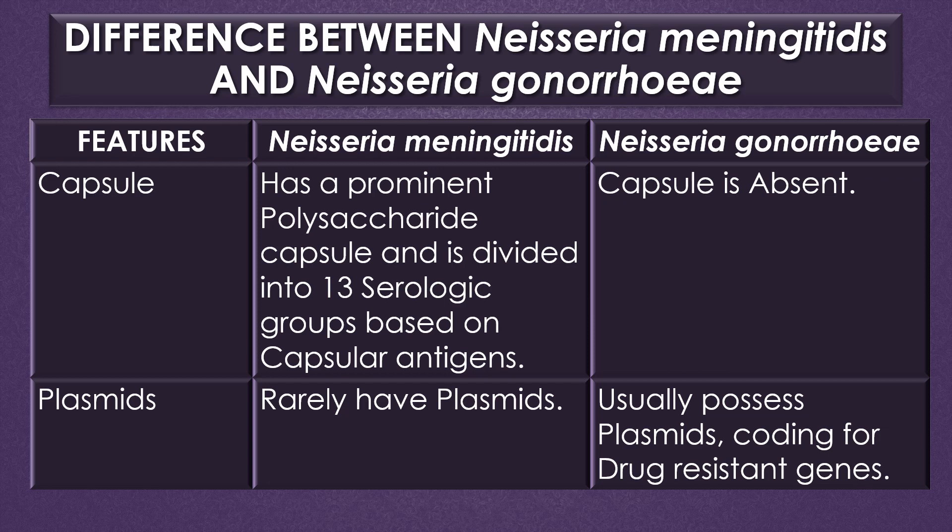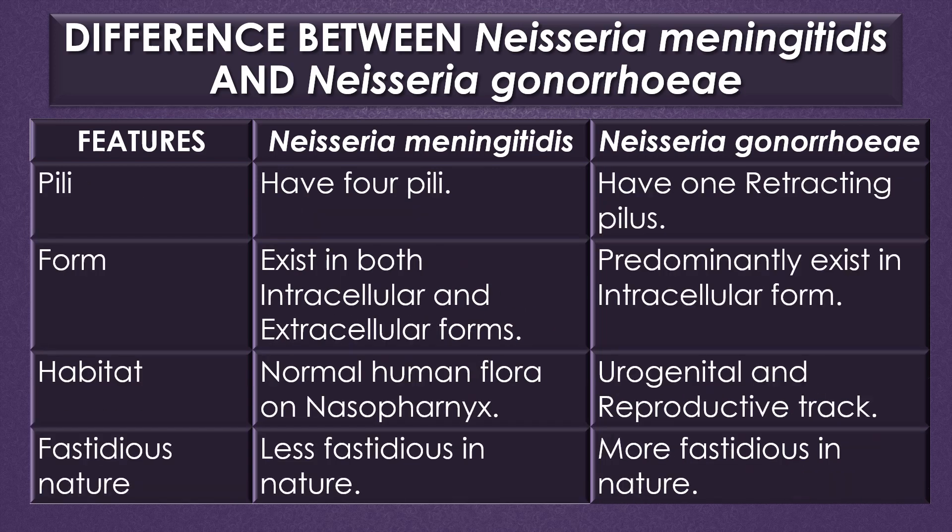Regarding plasmids, meningococci rarely have plasmids. Neisseria gonorrhoeae or gonococci usually possess plasmids which code for drug-resistant genes. Regarding pili, Neisseria meningitidis has 4 pili, but Neisseria gonorrhoeae has 1 retracting pilus.